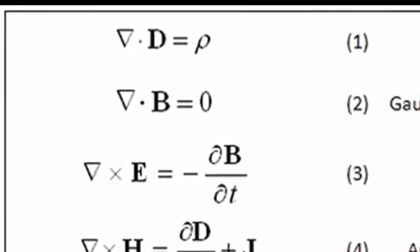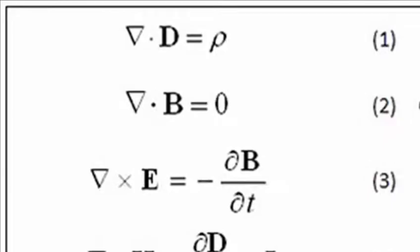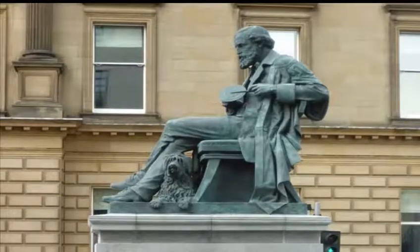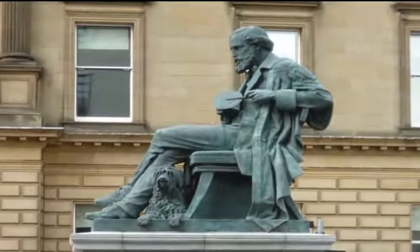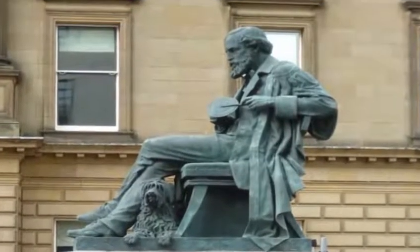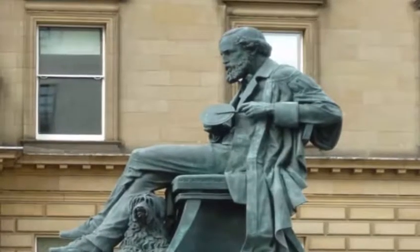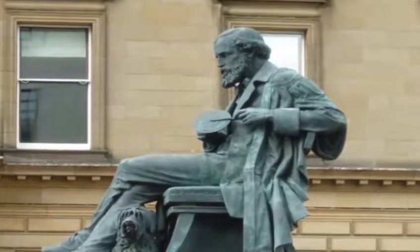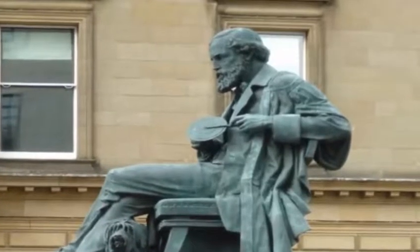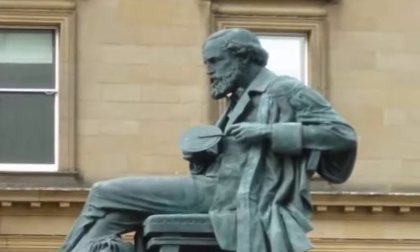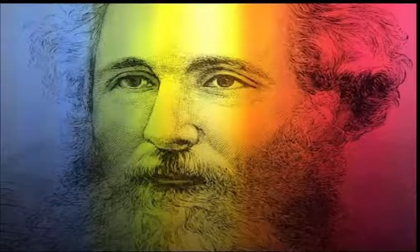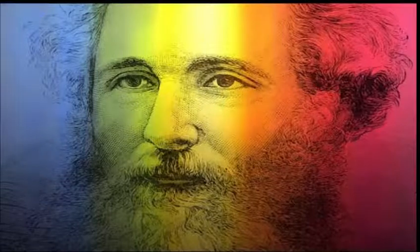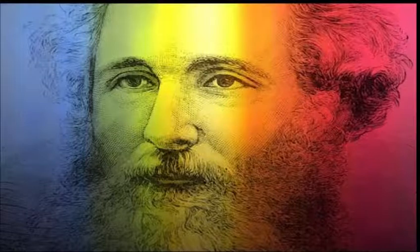His wife, the daughter of his college director, helped him in his experiments. The couple had no children and were dedicated to each other. James Maxwell died in Cambridge, England on November 5, 1879 at the age of 48 due to stomach cancer. His discoveries paved the way for many modern technological innovations and continued to have a major impact on physics during the next century. Albert Einstein praised his efforts, saying the theory of relativity originated from Maxwell's equations in the electromagnetic field.